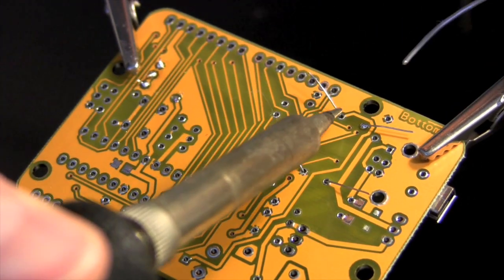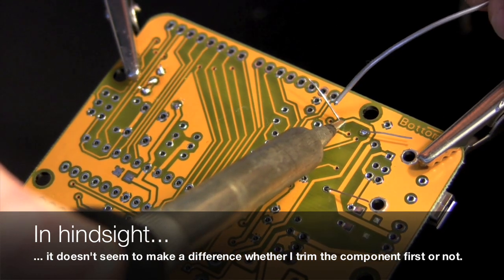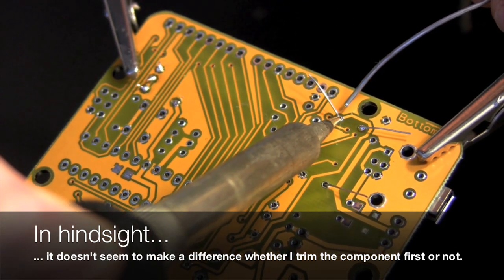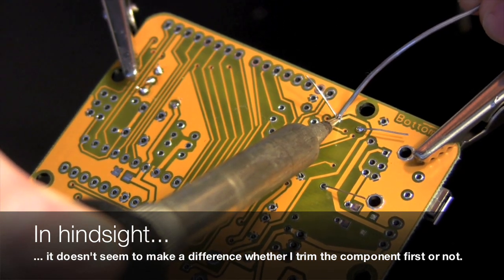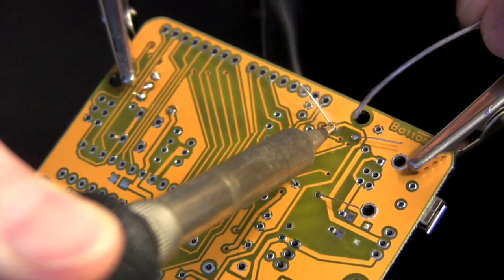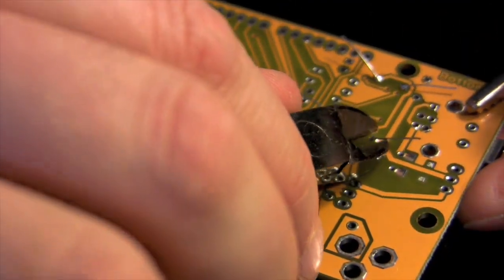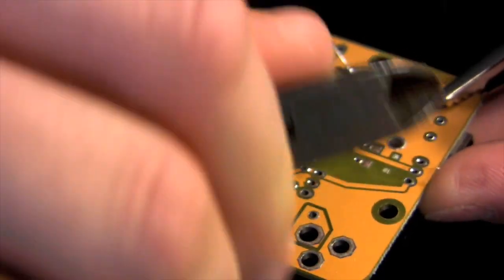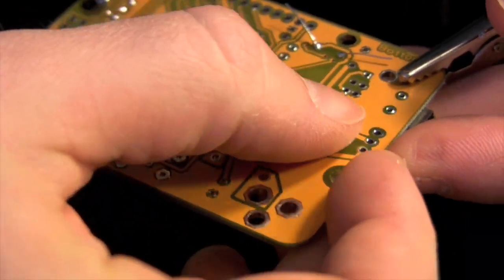Still, remember to touch both the pad and the leg, and heat it. I roughly do a 5 to 7 count. Here you can see that I've trimmed the legs of the second capacitor before soldering them.